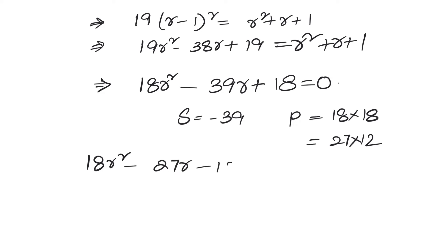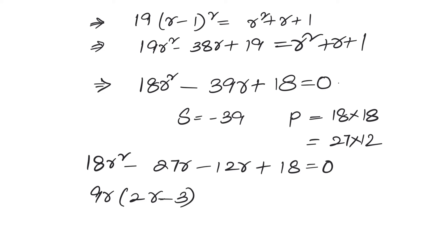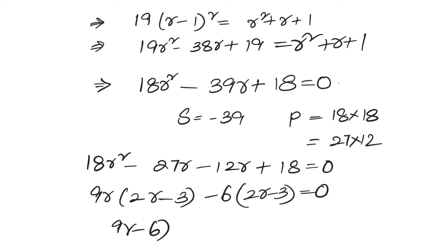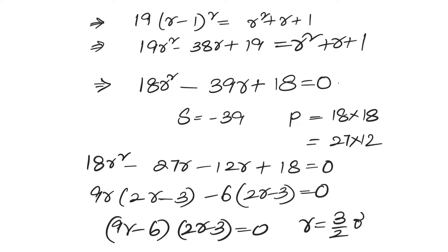Factorizing, we get R equals 2/3 or R equals 3/2. R equals 3/2 is ruled out because R must be less than 1 for an infinite GP — 3/2 is 1.5. So R equals 2/3 is our answer.